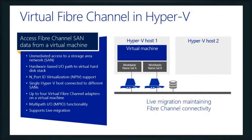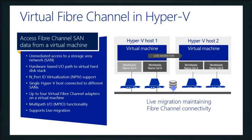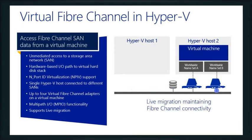Something we put into R2 is virtual fiber channel. Being able to use virtual fiber channel from our host is important, but more importantly, how do I actually use virtual fiber channel inside of my virtual machine so my virtual guests can access it? We support import virtualization ID, up to four virtual fiber channel adapters, and multi-path I/O functionality. This is about our guests accessing that storage directly, and it's supported across live migration.